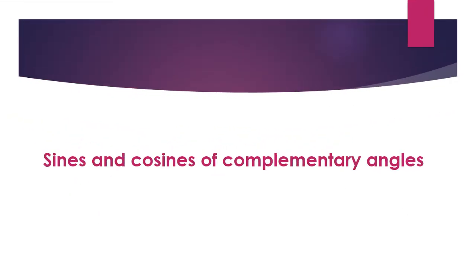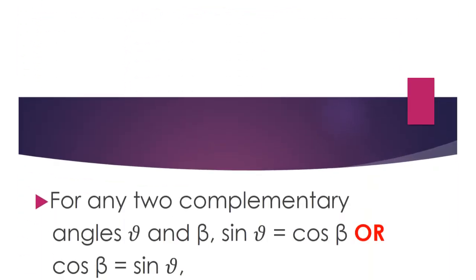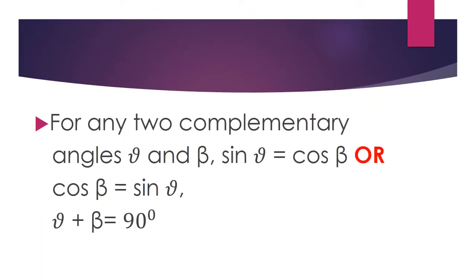Then we are going to consider sines and cosines of complementary angles. We normally say: for any two complementary angles theta and beta, sin theta equals cos beta, or cos beta equals sin theta, where theta plus beta equals 90 degrees.